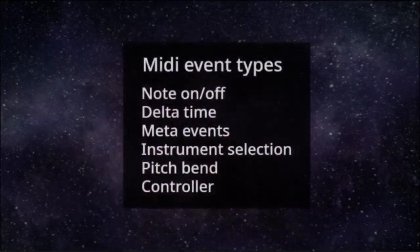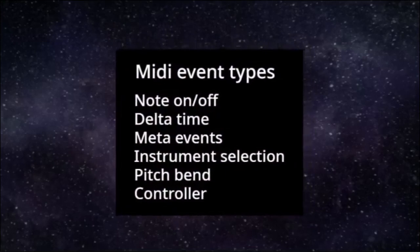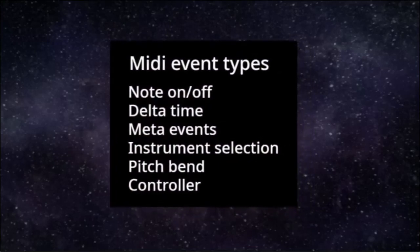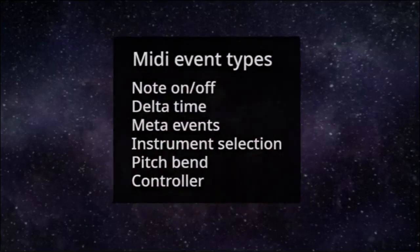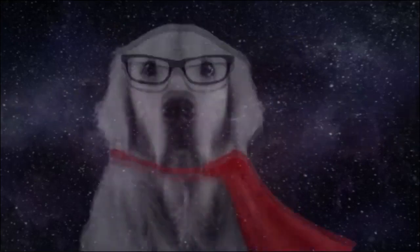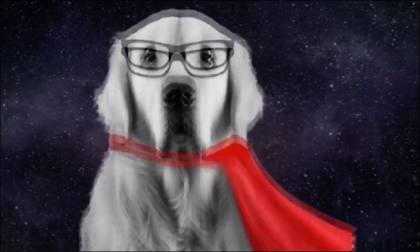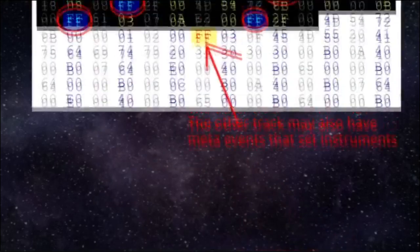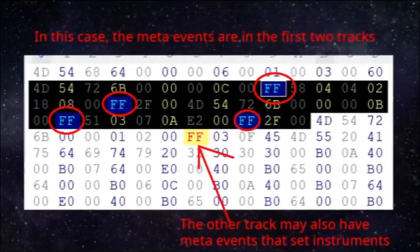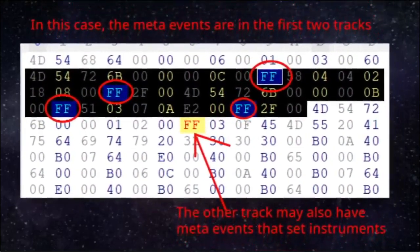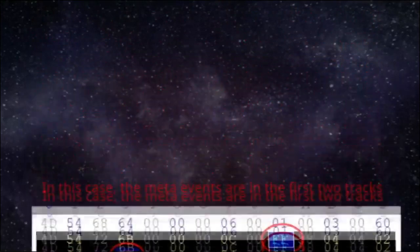Now we get to the juicy stuff. There can be many events in a track. These include the note on, note off, delta time, meta, instrument selection, pitch bend, and controller events. Note that before every event there is always a delta time. A delta time tells you exactly how long to wait before reading the next event. In many cases, the meta events would be in the first track, then the following tracks would have a combination of the others.